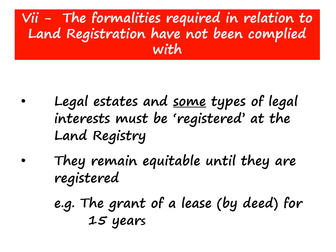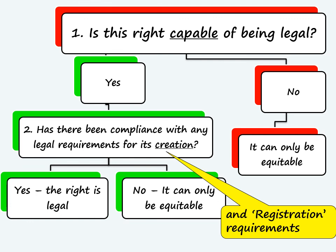The last way equitable rights arise is where the formalities in relation to land registration haven't been complied with. This will become clearer after you've studied how estates and interests are dealt with in registered land. Sometimes the registration process must be completed before these rights can become legal. For example, if you grant a lease by deed for 15 years, that would ordinarily create a legal lease — but if title to the land is registered, the lease will remain equitable until you have completed the registration process. Back to our flowchart: there are some types of rights and estates which can only be completed and become legal when the registration requirements have been completed.